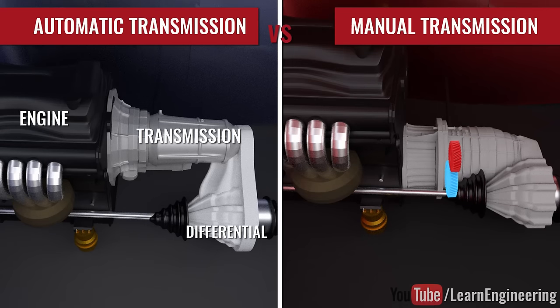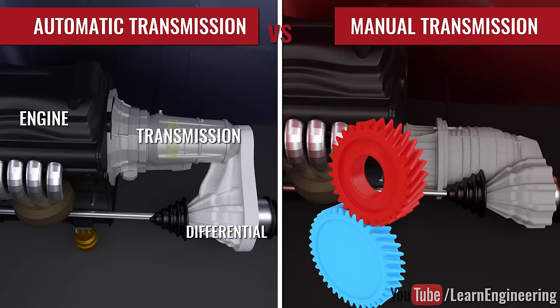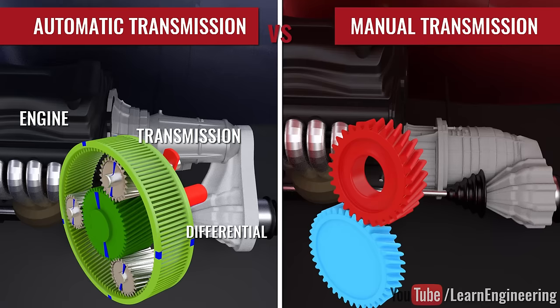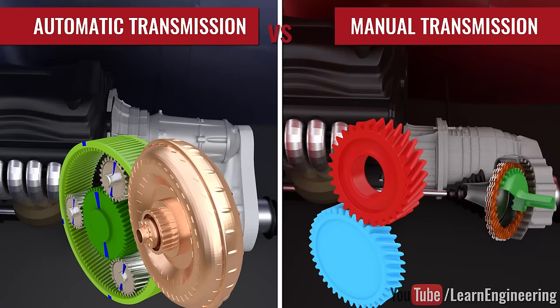One is based on a simple gear pair, while the other is based on a planetary gear set. One uses a torque converter, while the other uses a clutch pack.